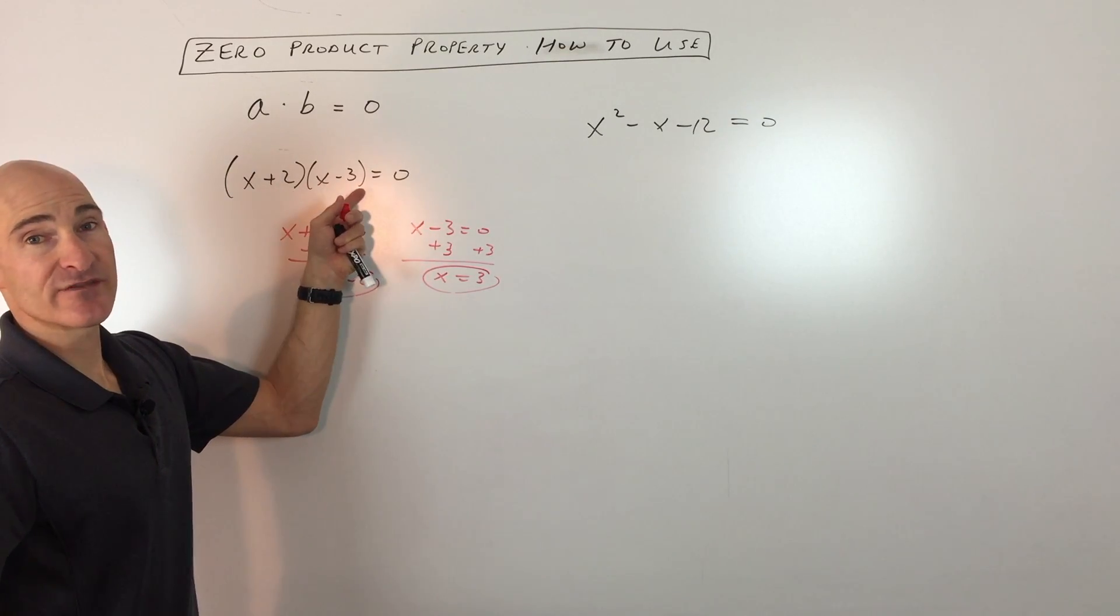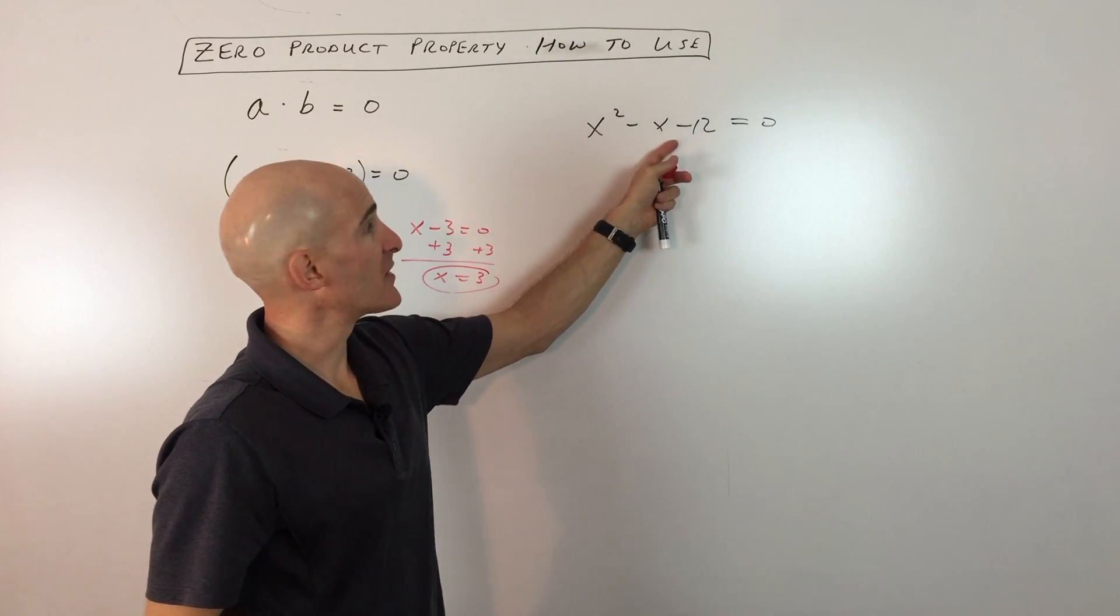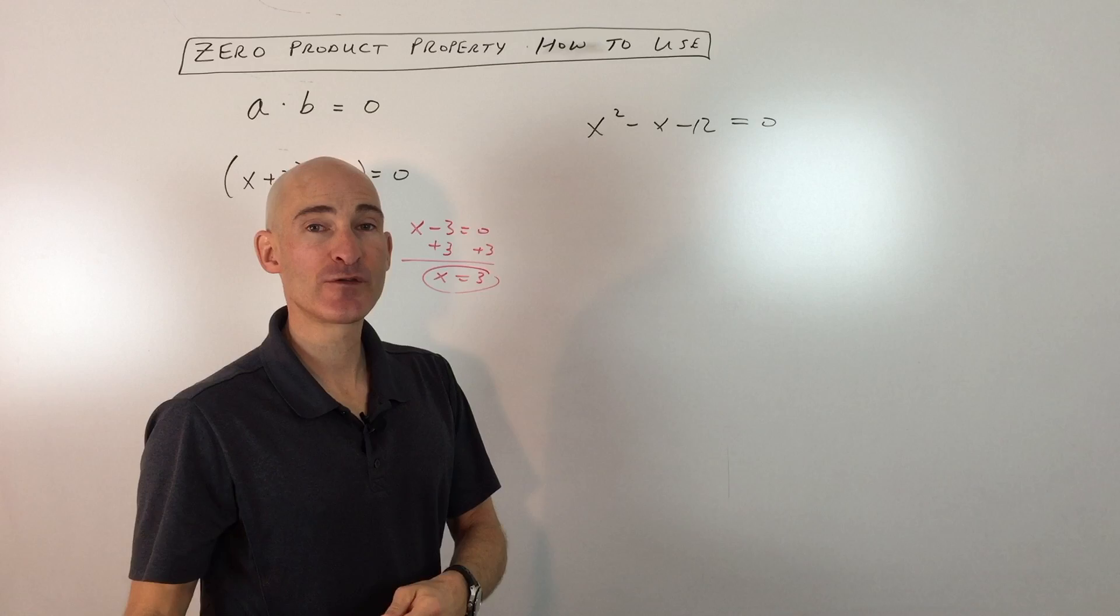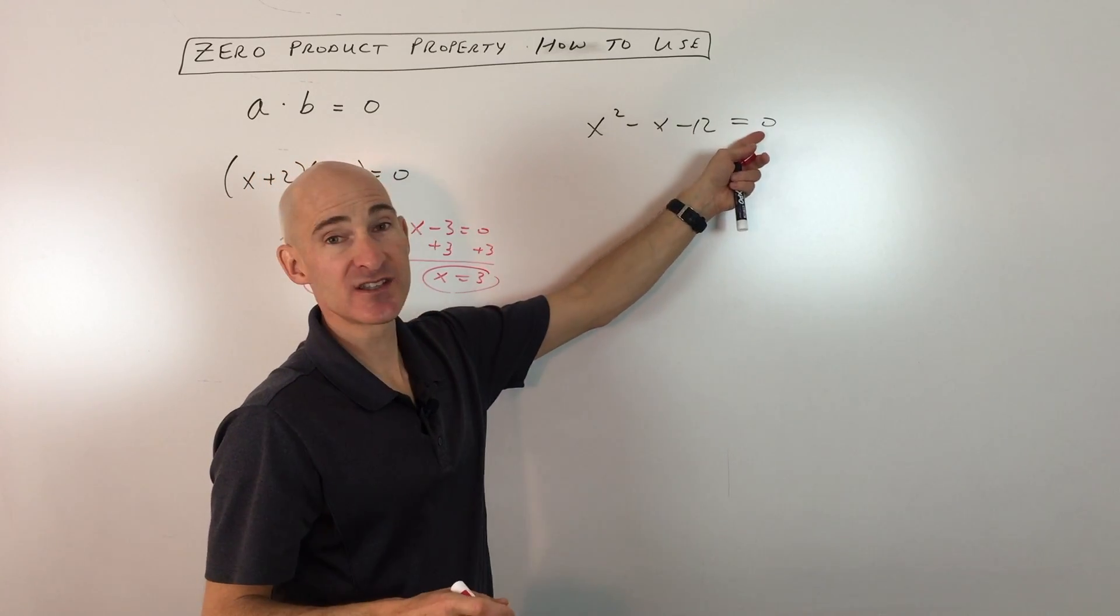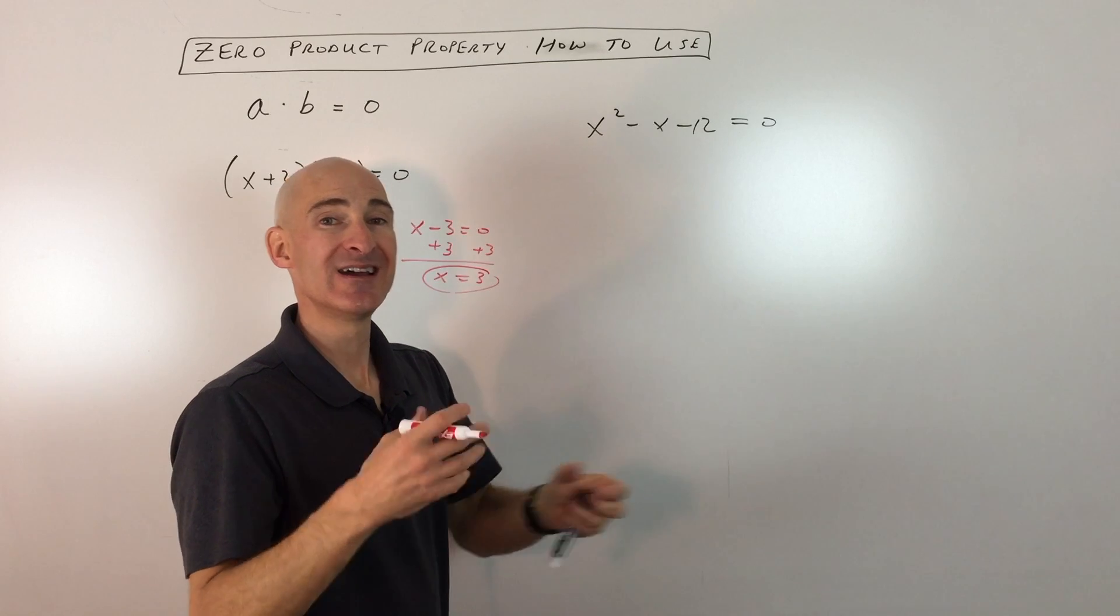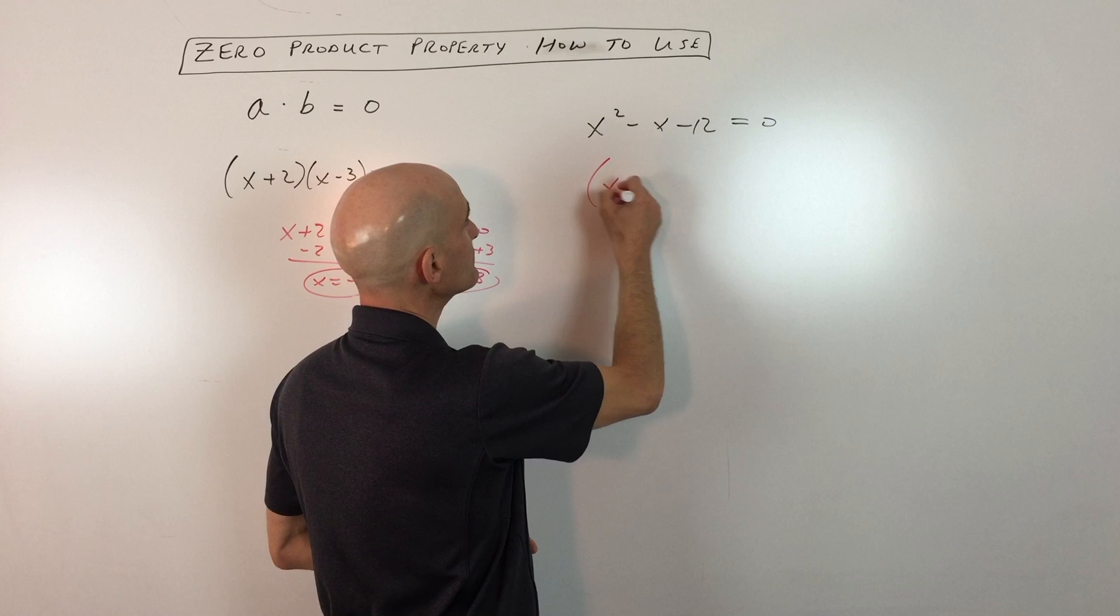Now, they don't always give it to you in factored form. They'll give it to you as a polynomial or trinomial like this. What we want to do is factor it first so it's a product of two factors. Because it's equal to zero, we can use the zero product property to solve by setting each group to zero. So we're going to factor this first.